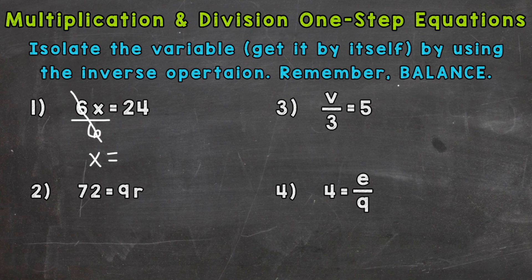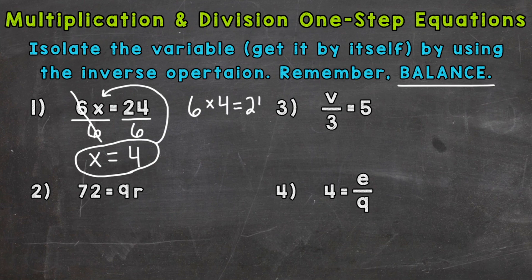Now, remember, we have to keep everything balanced. So whatever we do to one side, we have to do to the other. So if we divided the left by 6, we have to divide the right by 6. So 24 divided by 6 equals 4. And we have our answer, x equals 4. Now we can always double check our answer by plugging it back in to the original equation. So 6 times 4 equals 24. That is true. So we have the correct answer.